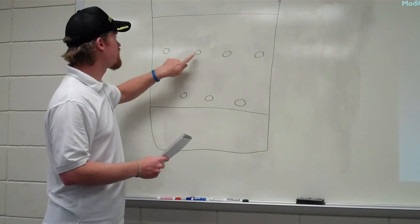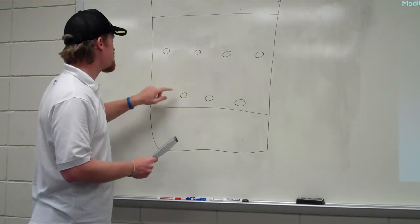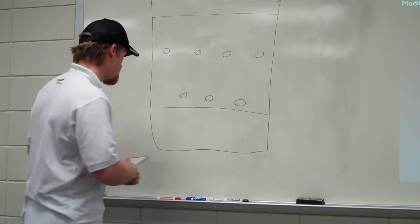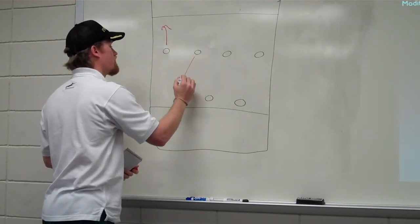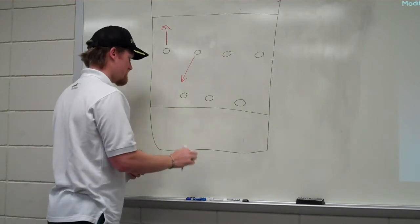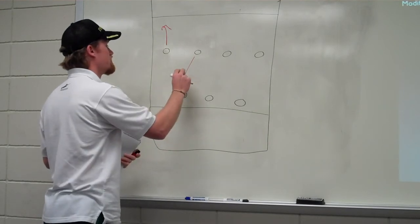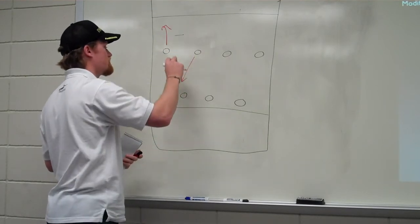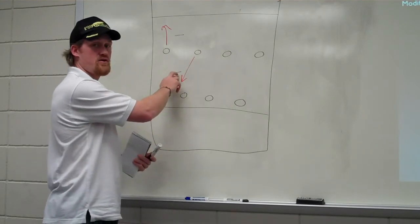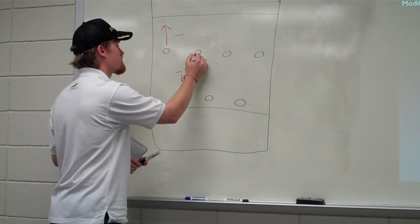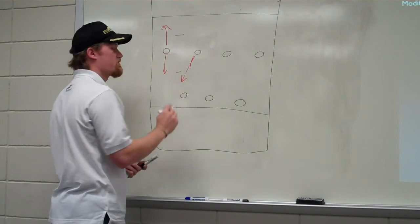One of the things we want to focus on is always having two options. If the disc is to the side, either making a deep option or a short option in the event of a bracket, so if they have someone assigned specifically to an end, to a short or a deep, then also making two options by making your defender make a decision. So timing a cut so one person goes first and trying to get the defender to commit to one side, and then having another option.